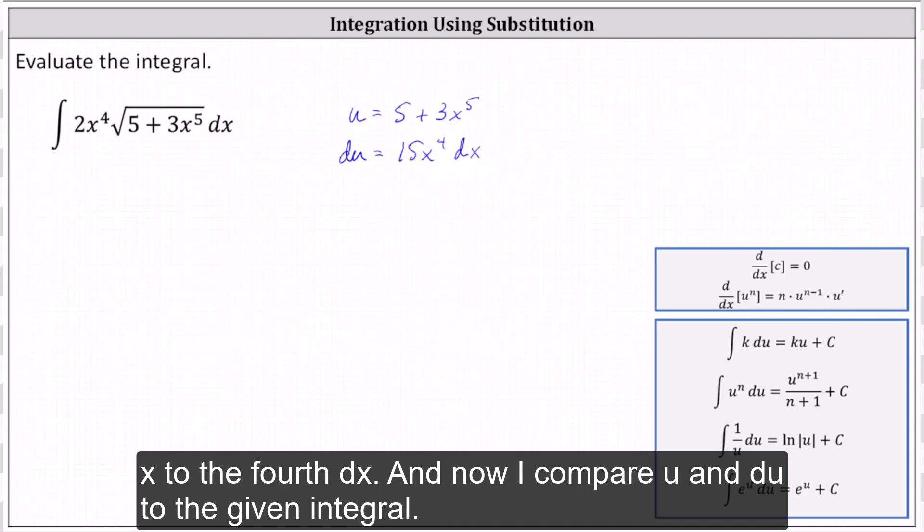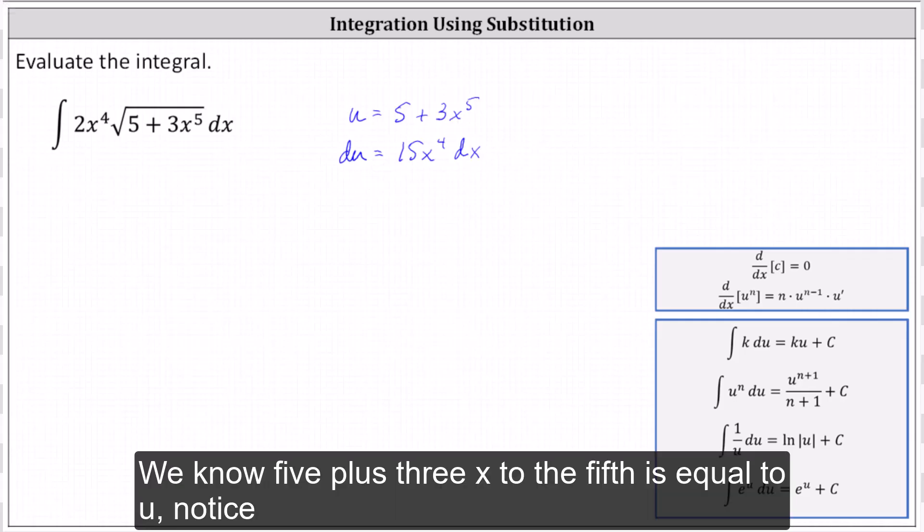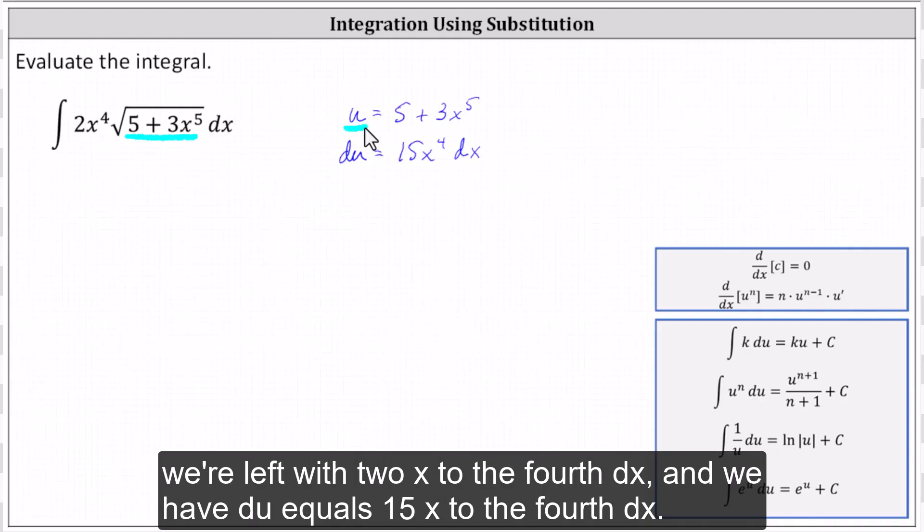And now I compare u and du to the given integral. We know 5 + 3x^5 is equal to u. Notice we're left with 2x^4 dx and we have du equals 15x^4 dx.